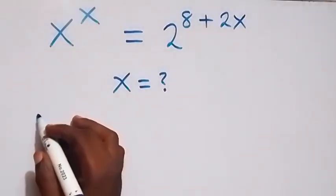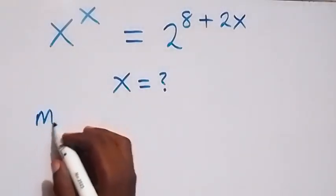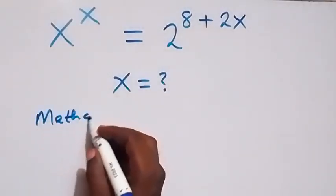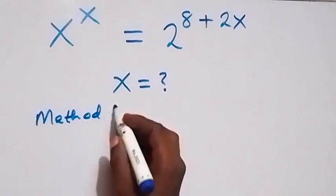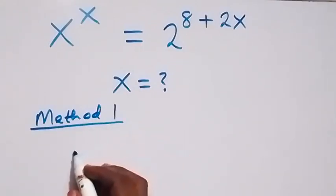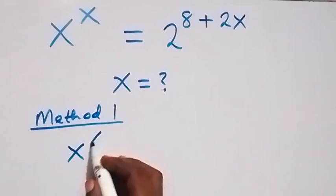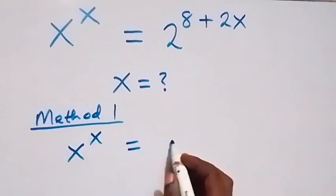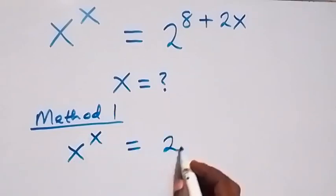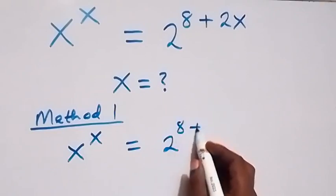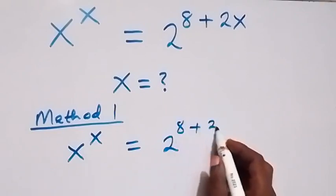Let's use two methods. The first one, method one. From what is given, which is x raised to power x equals to 2 raised to power 8 plus 2x.